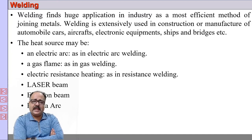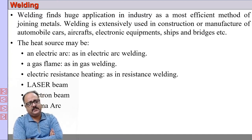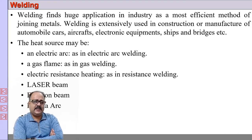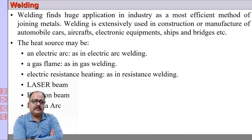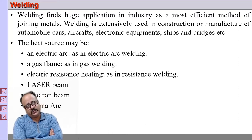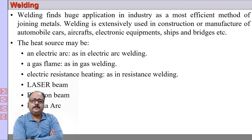Welding is a very important part of manufacturing, and obtaining a good quality weld is extremely difficult. There has to be a heat source — it may be an electric arc, a gas flame, resistance heating, laser beam, electron beam, plasma arc, or friction. Whatever the heat source, it will be used to melt the metal at the joint.